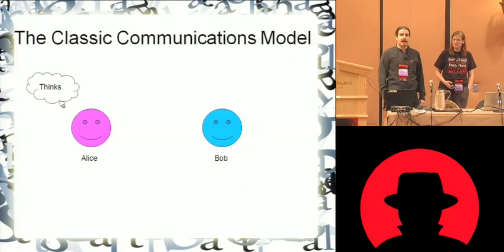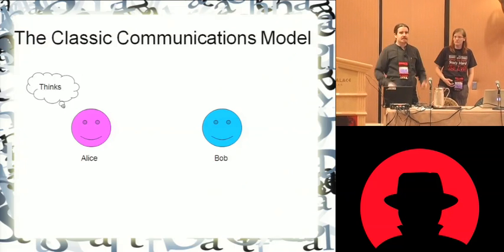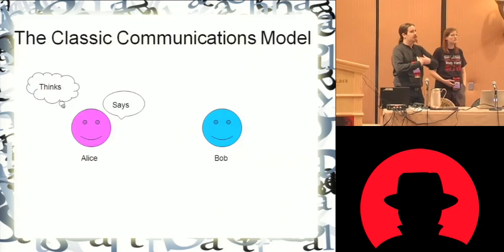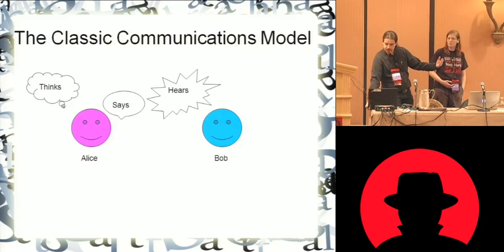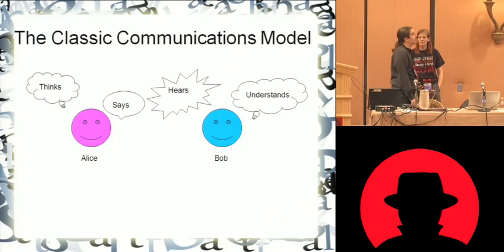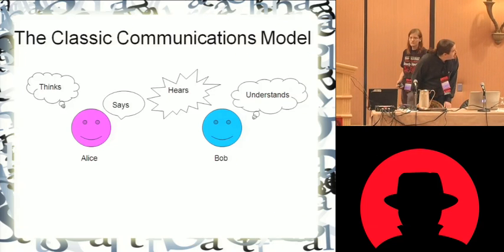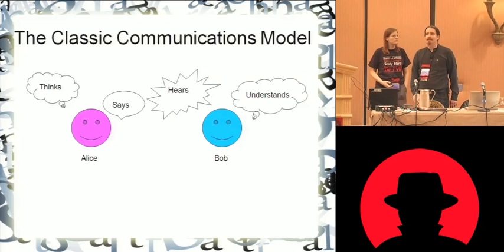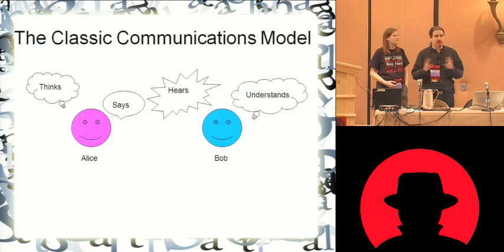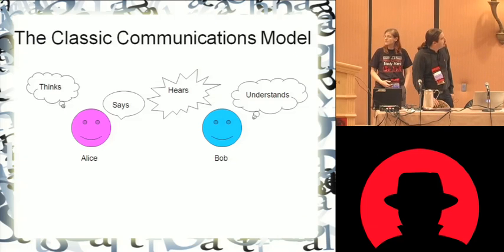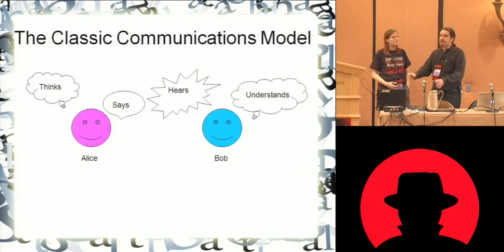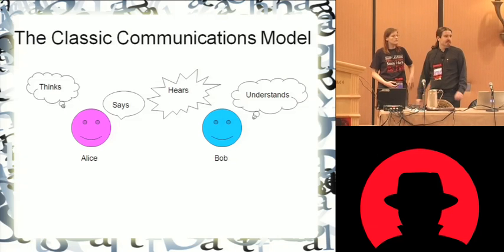So we've got four items here. We have the thought that Alice thinks, then we have the translation of that thought into what she says, we have what Bob hears her saying, and then how Bob understands it. Now, if you look at that, you can see that at every transition point there's the potential for corruption of the information. Everyone's familiar with the old telephone game that highlights the problem that cascading errors can cause, but those errors start immediately inside Alice's head.